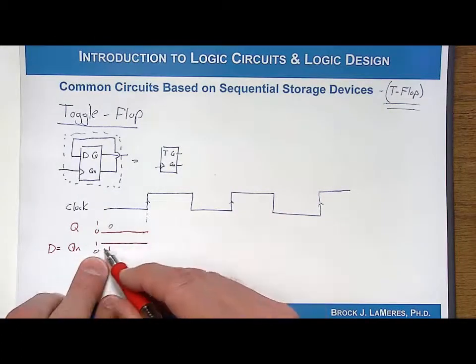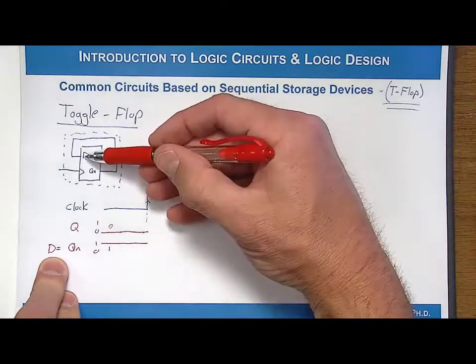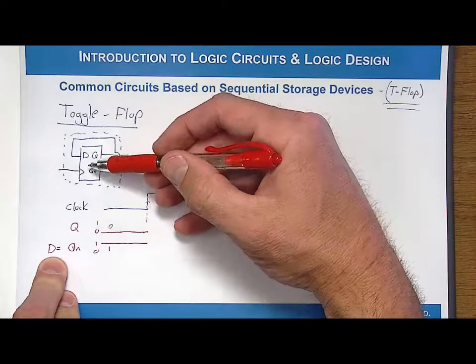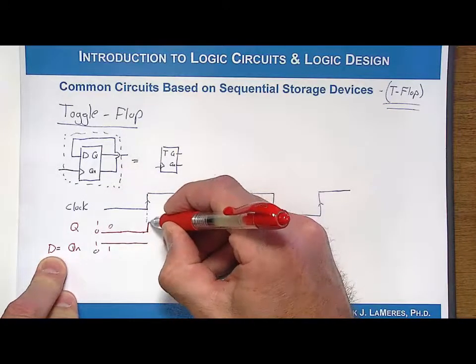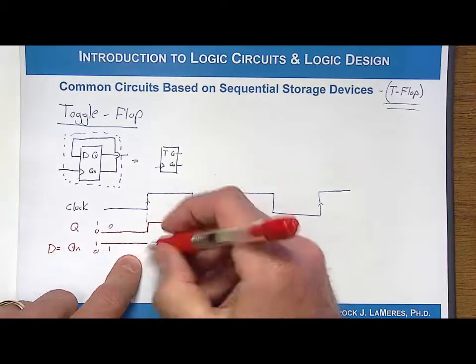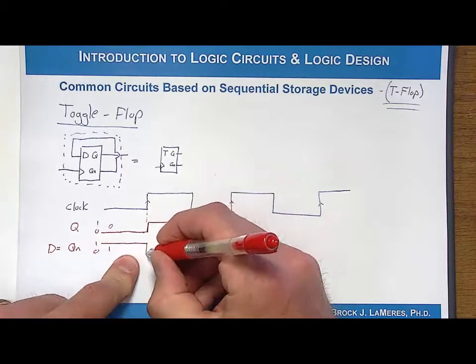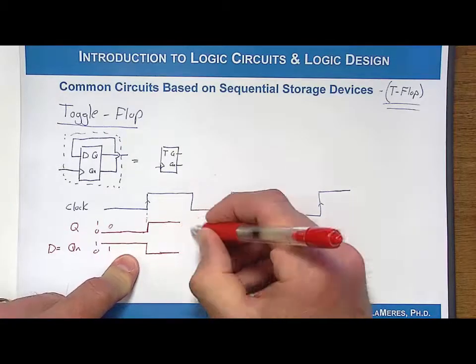Whatever QN was at this rising edge of a clock is going to be transferred over and stored on Q. So that means QN is equal to a one, so Q is going to be updated to a one. Then QN is going to be the inverse of that, so it will go down. This will actually transition on a clock edge.